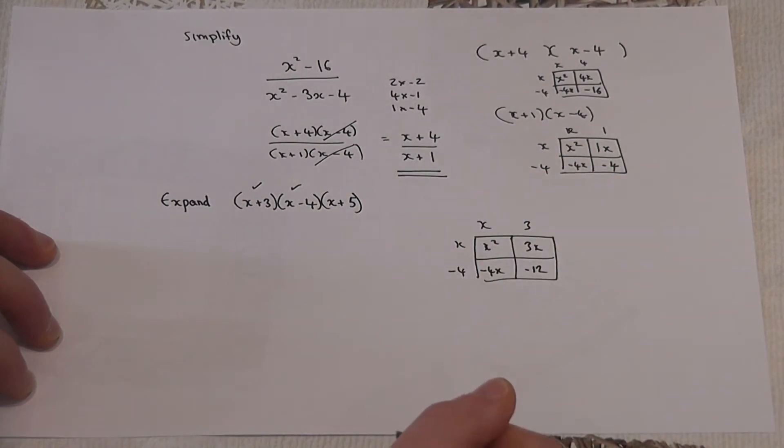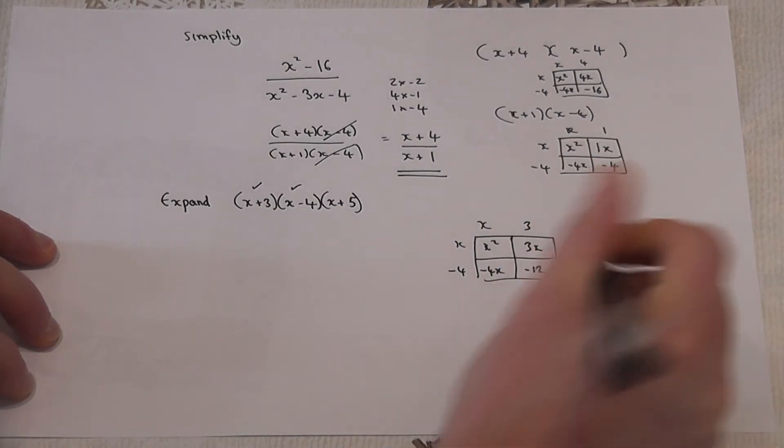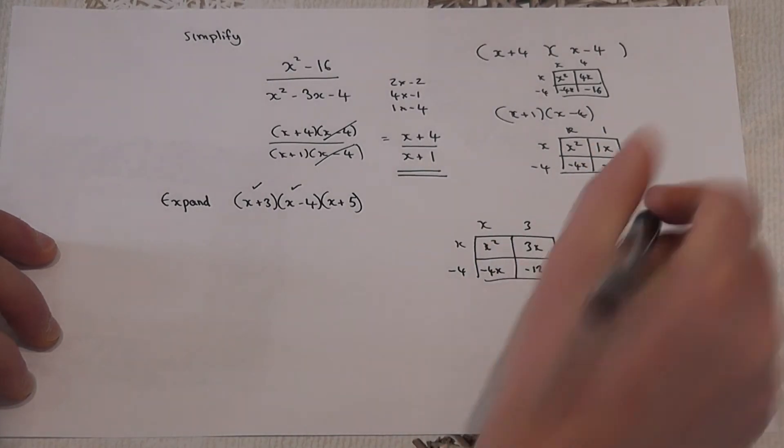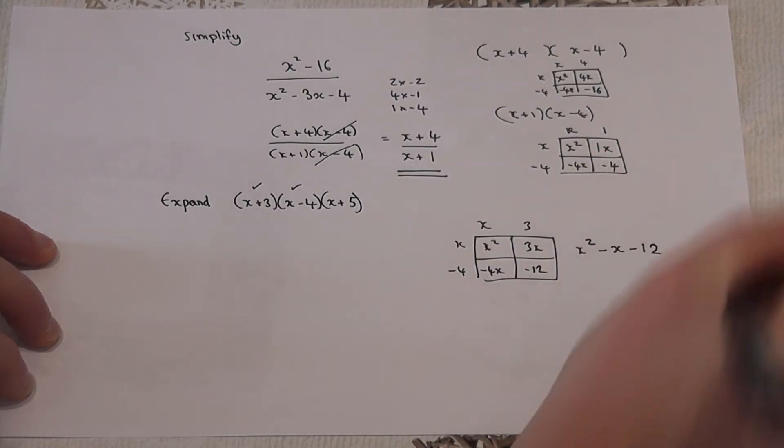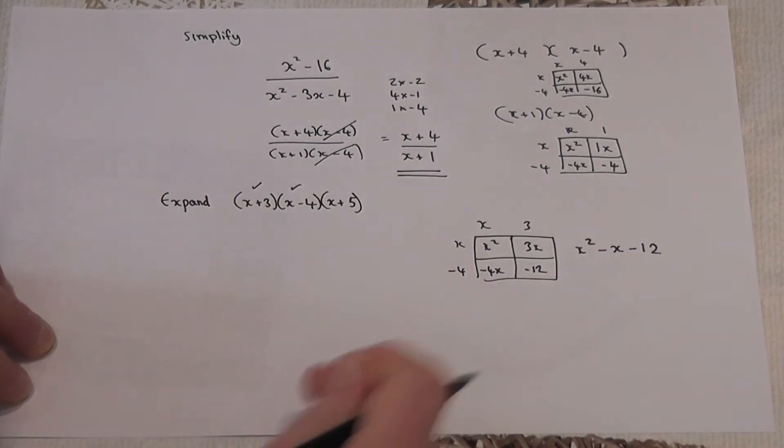Which, being very careful here with the signs, gives me an x squared. 3x take away 4x is minus 1x, with a minus 12. So the first two expand to give me a new answer.